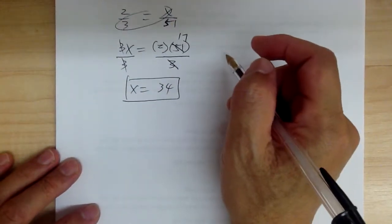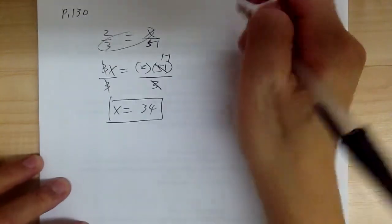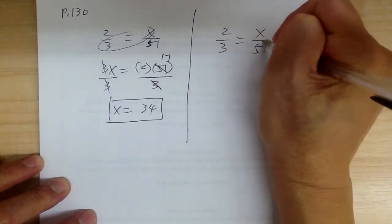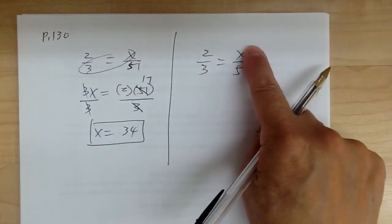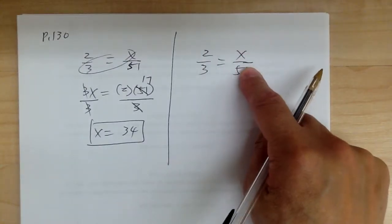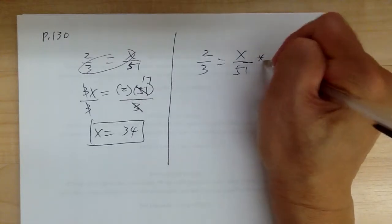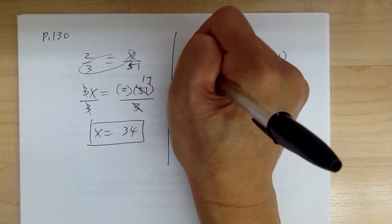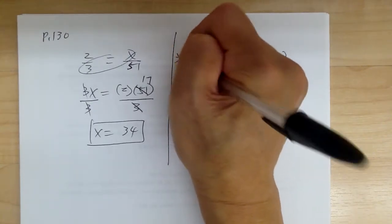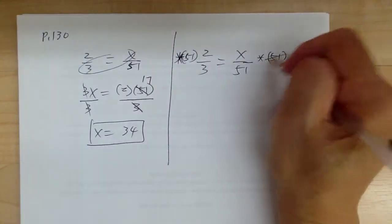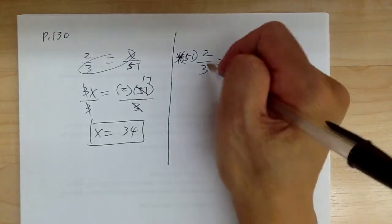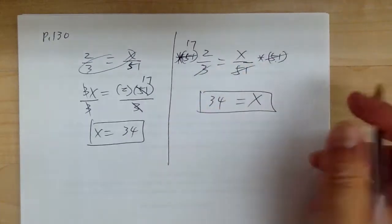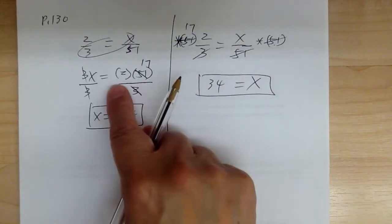Another method: instead of cross multiplying, just undo the operation directly. Since x is divided by 51, multiply both sides by 51. The 51s cancel, and on the other side 51 divided by 3 gives 17, so 2 times 17 gives x equal to 34. Either way you get the same answer, but this method saves you one step.